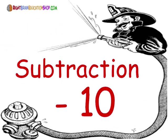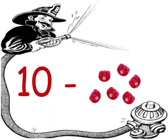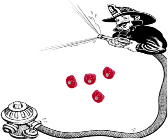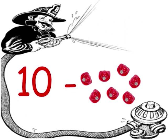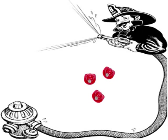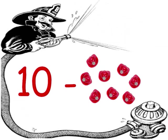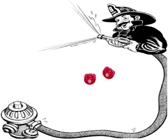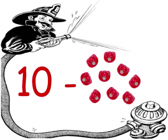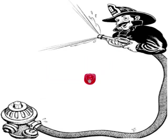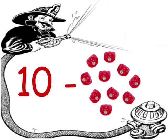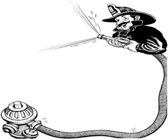Subtraction minus 10. 10 minus 6 is 4. 10 minus 7 is 3. 10 minus 8 is 2. 10 minus 9 is 1. 10 minus 10 is 0.